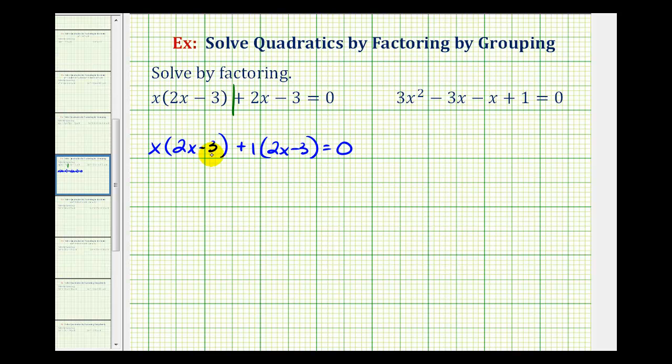And now notice these two products do contain a common binomial factor of 2x minus 3 which we'll now factor out. Well if we factor out the quantity 2x minus 3, notice how we'd be left with the quantity x plus 1.